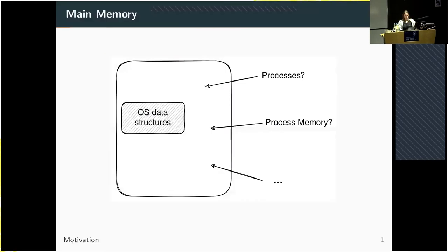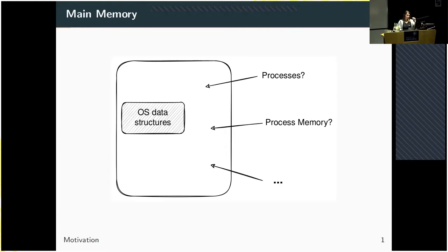The motivation for this topic is best understood if we look at the topic of main memory analysis. When we analyze main memory images, we often want to know many things: which kinds of processes are there, what is in the process memory, and what are the open network connections. For this information, we rely on data structures that are used by the operating system.